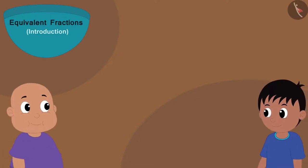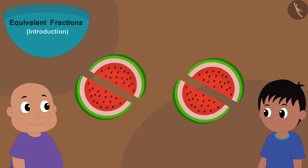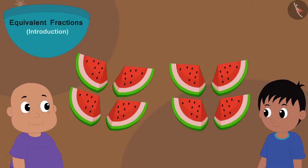Now, Raju told Bablu that even now those pieces are quite big. Can he cut them into smaller pieces? Now, he cut all the pieces from the middle and divided them into two pieces each. Now, the whole watermelon is divided into eight parts.